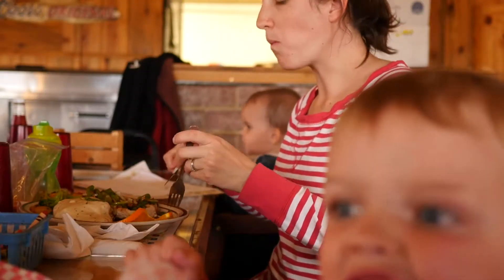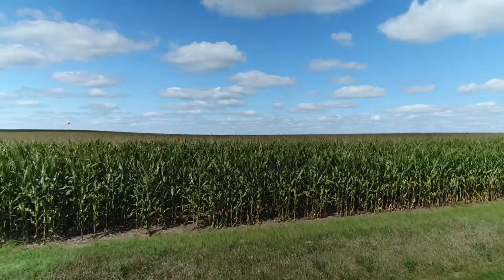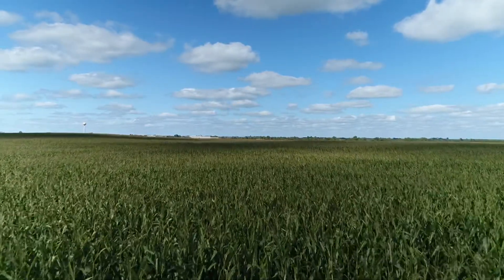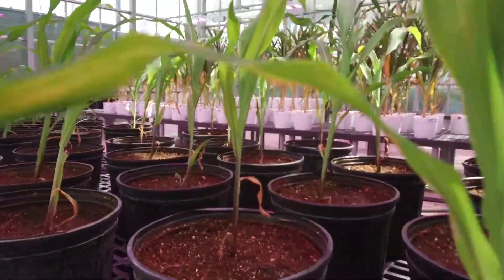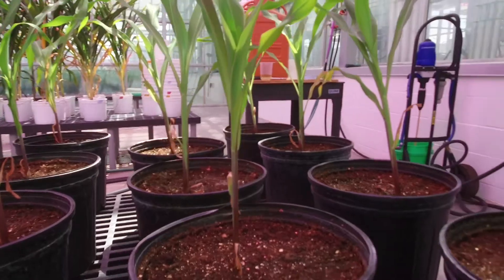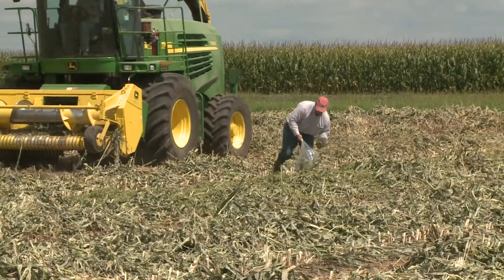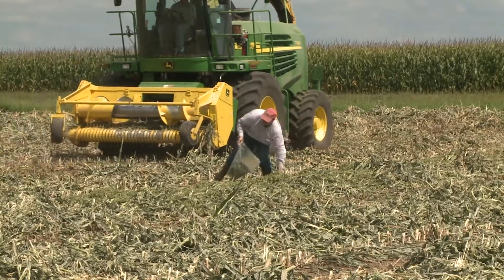Sorghum is able to grow on more marginal land where it's not competing with corn. It's able to grow in areas with less water, in areas with high heat stress. So the goal with most biofuels crops is to be able to grow on this marginal land that either is not being used for crop production right now or is being used for crop production with extremely low yields.